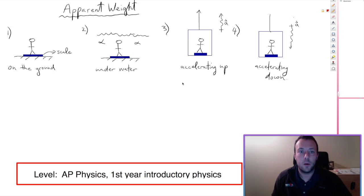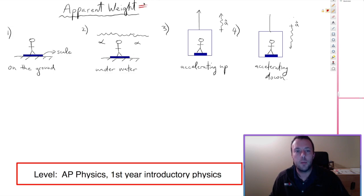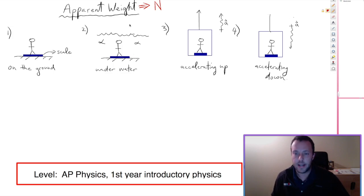Today I'd like to talk about apparent weight and problems that deal with apparent weight. I came up with six examples, four on the first page and two on the next page, that are different situations where you might be asked to calculate the apparent weight. The first thing we have to do is define what apparent weight means. Whenever someone asks you to find the apparent weight, just remember that the apparent weight is basically the normal force — that's the force of the scale pushing up on the body.